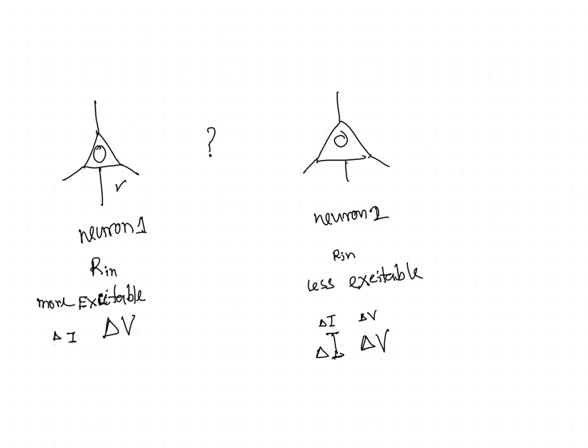So this particular neuron, the first neuron, is way more excitable. That means a small change in current can give rise to a huge change in the voltage. And why is it so? Because the change of the voltage and the change of the current is actually our input resistance. And now input resistance is a constant term. So if there is a small change in the current, in order to make it constant, the change in the voltage would be big.